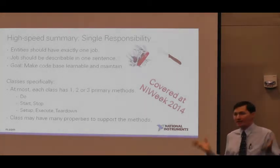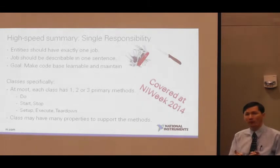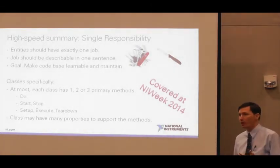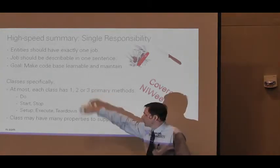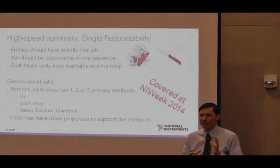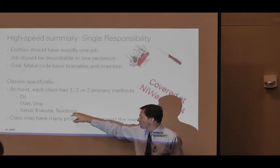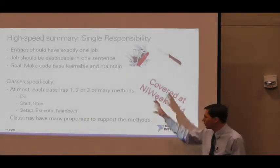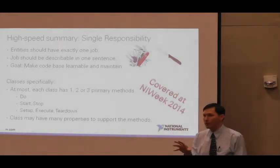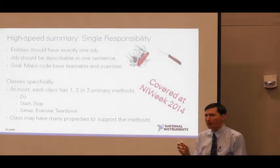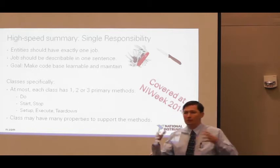Single Responsibility: entities should have exactly one job. That job should be describable in a single sentence. The goal is to make your code base learnable and maintainable. When you bring a new person onto your staff, they need to understand what the parts of the system are and be able to find what's responsible for a change. For classes — and when I say classes, I also mean typedefs and the functions that act on that typedef — at most each class has one, two, or three primary methods, like do/start/stop or setup/execute/teardown. This single responsibility means when you write a VI, don't put a lot of extra inputs for optional commands unless they're really part of the core job. When a VI is doing so many things you can't describe it in a sentence, create sub-VIs and break it down into manageable pieces.